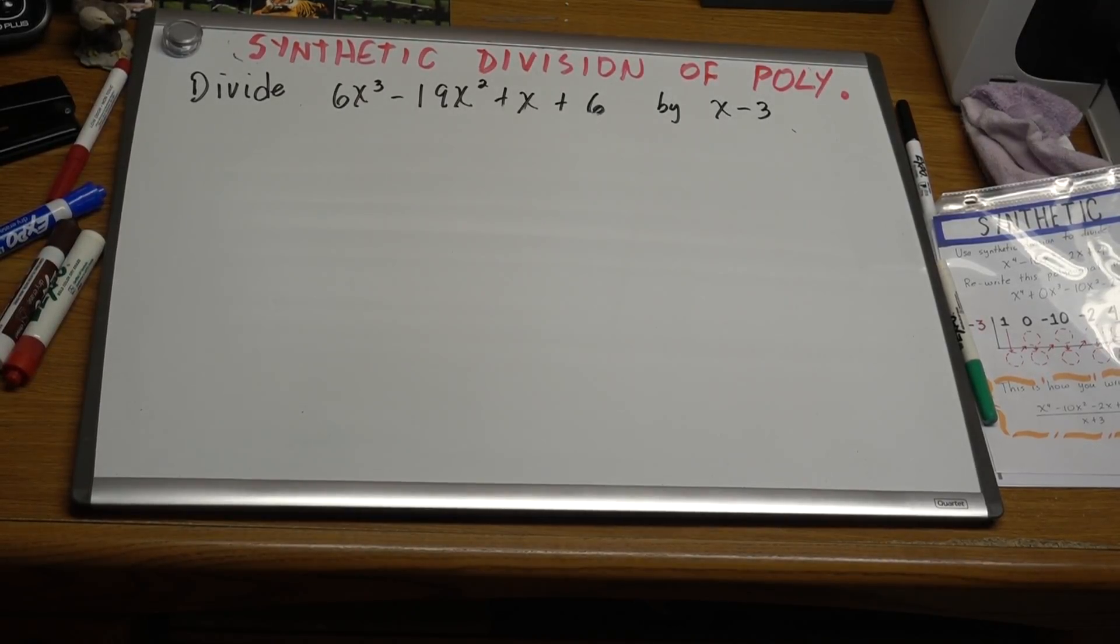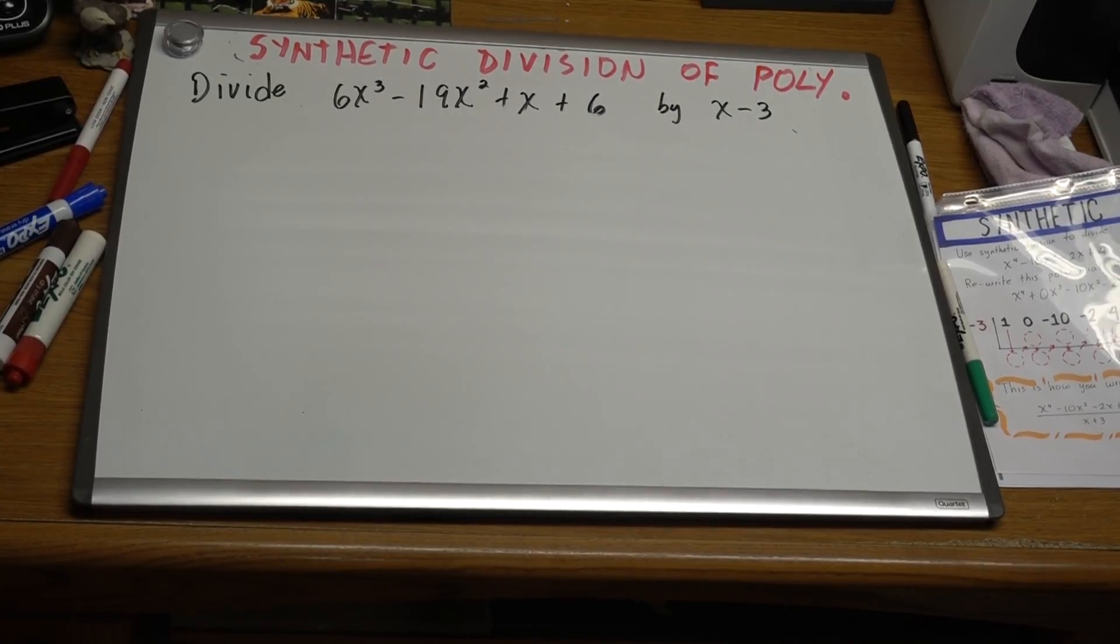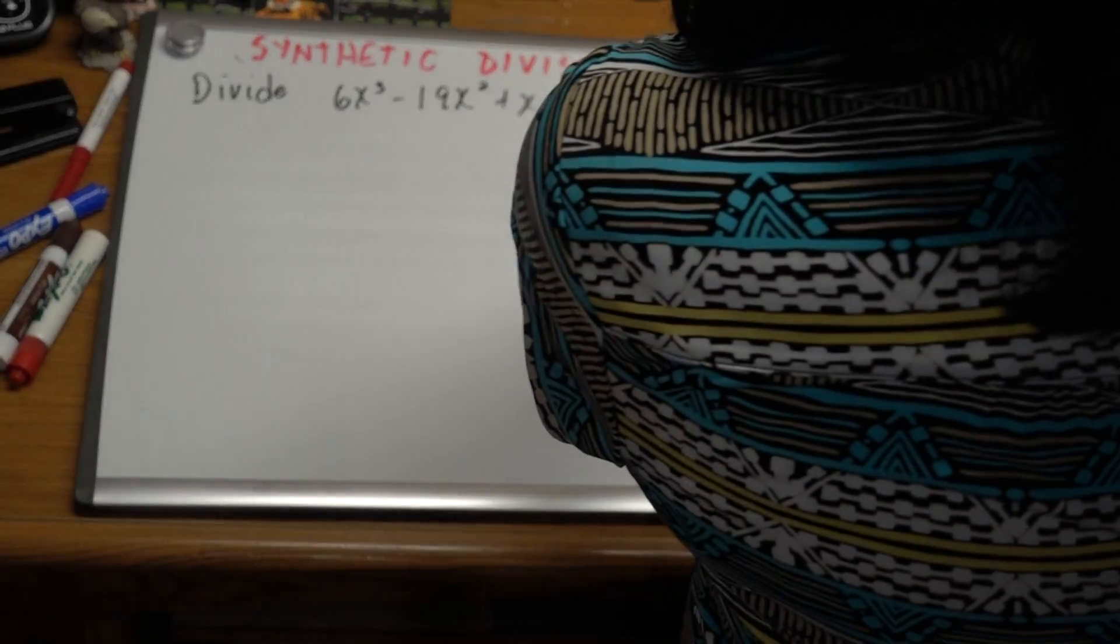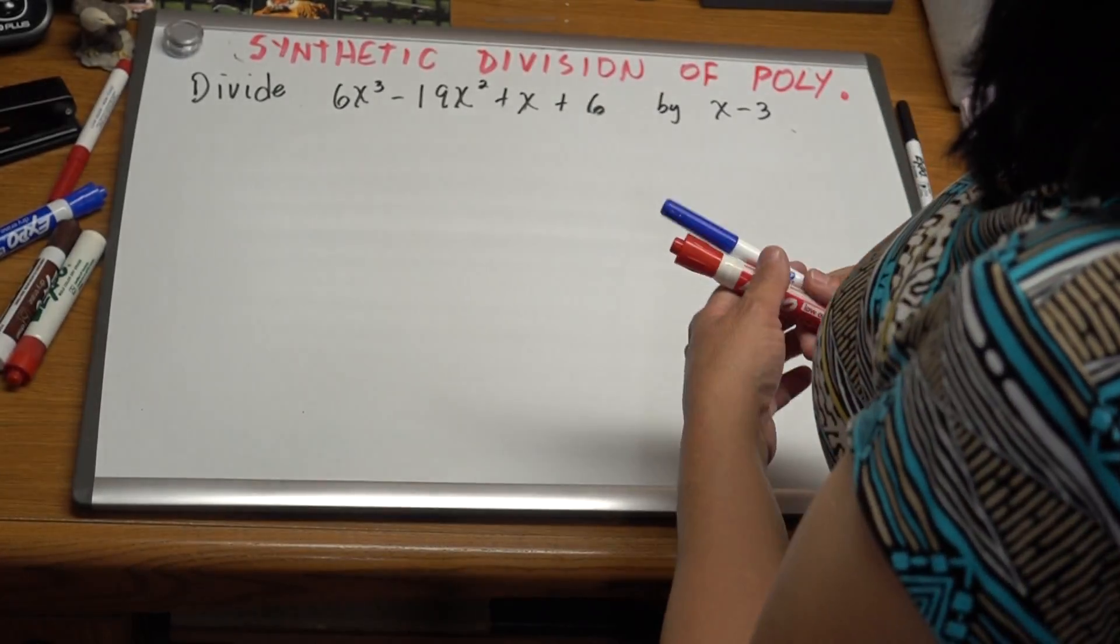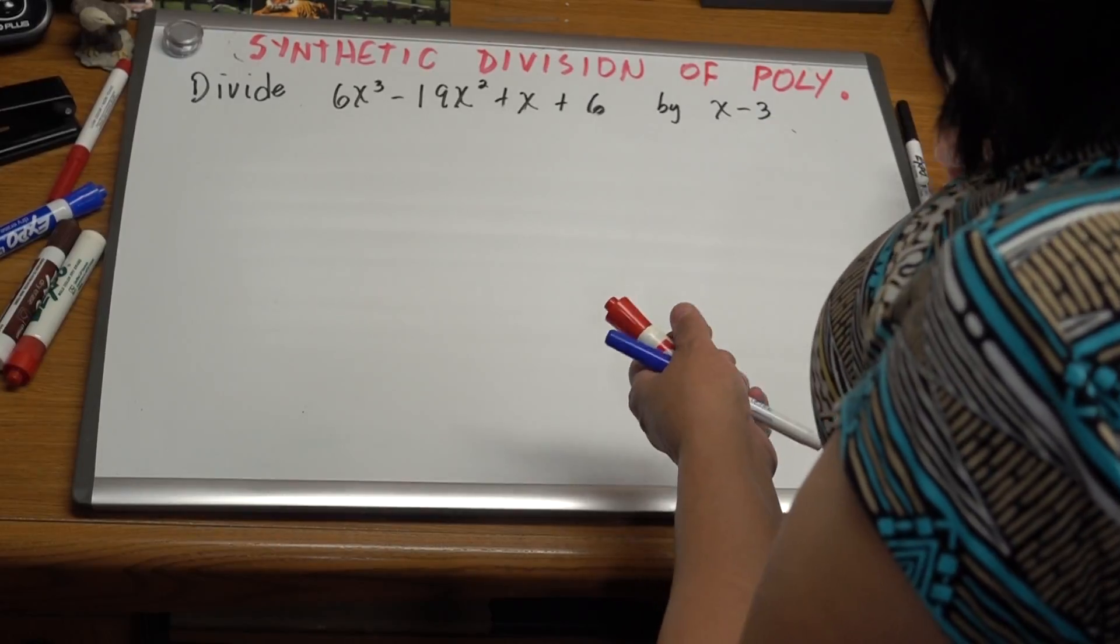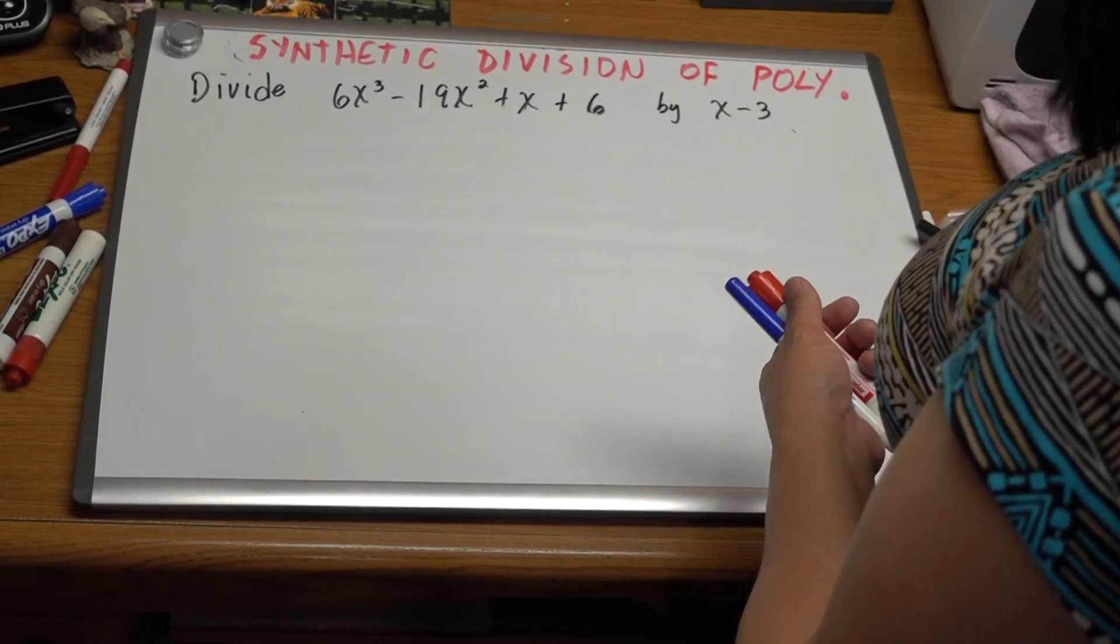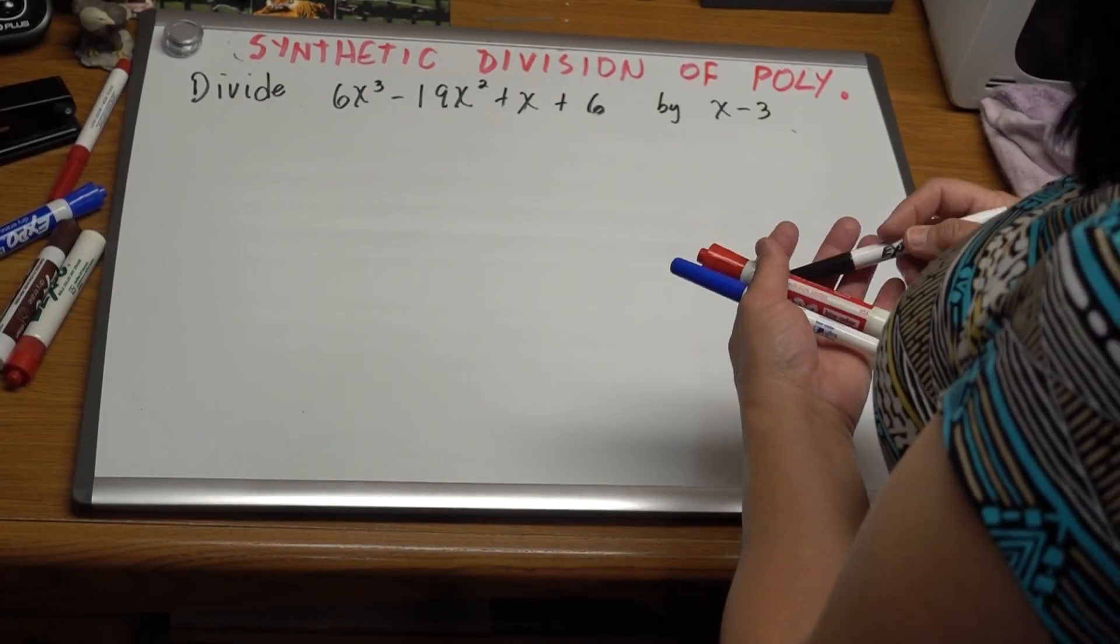Now we're going to go through synthetic division process of polynomials. Synthetic division is a shortcut of the long division process. In other words, we're going to find the answer of dividing 6x³ - 19x² + x + 6 divided by x - 3, but doing a process that is way shorter than the previous one, which is the long division process we already went through.